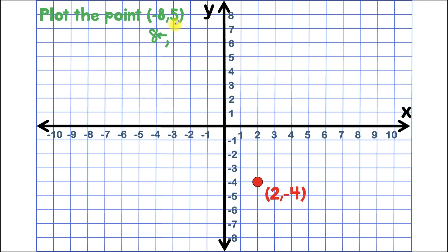And then I look at my second number, and that's going to tell me if I go up or down. Since it's positive 5, I'm going to go 5 units up.